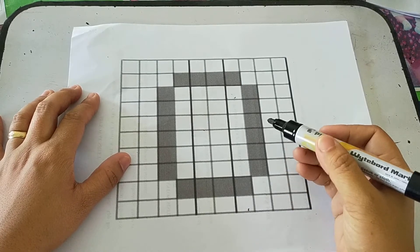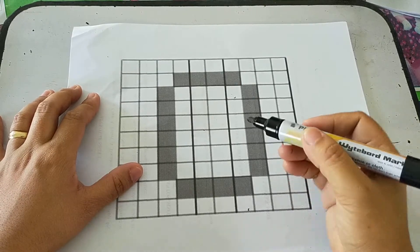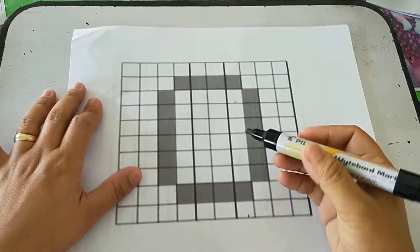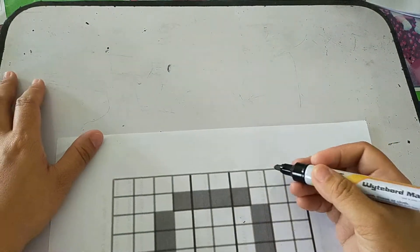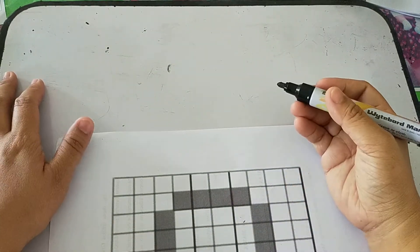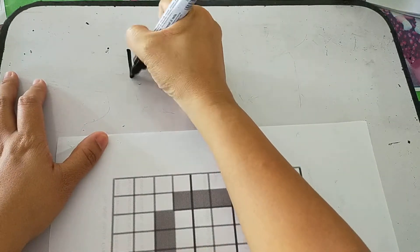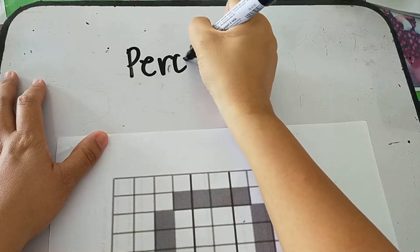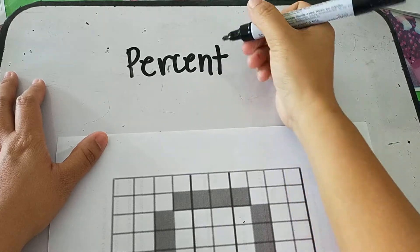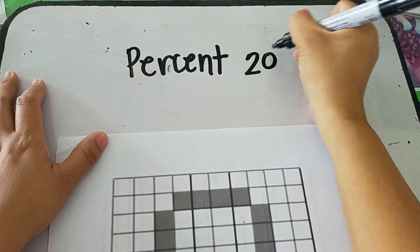So 20 parts of it are being shaded or 20 out of 100. So how are we going to write it in percent form? So in percent form, this is written as 20%.